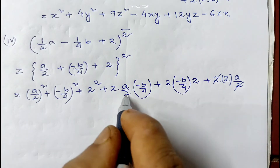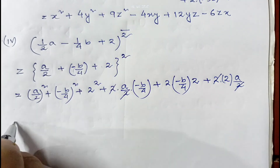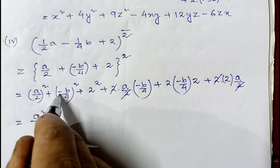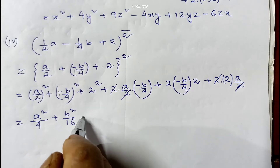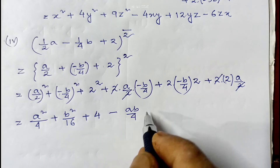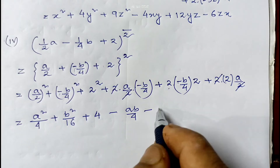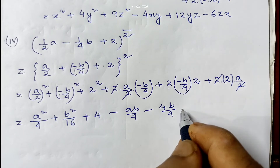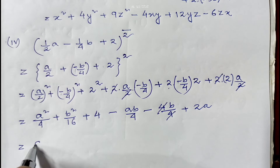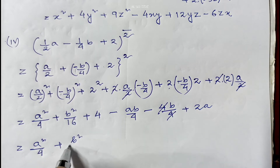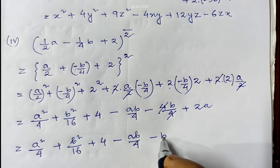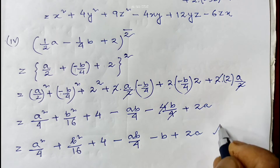The 2s cancel appropriately. So we get a²/4 + b²/16 + 4 − ab/4 − b + 2a. This is the required answer.